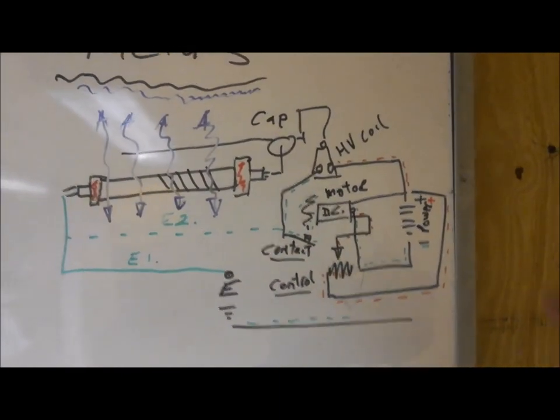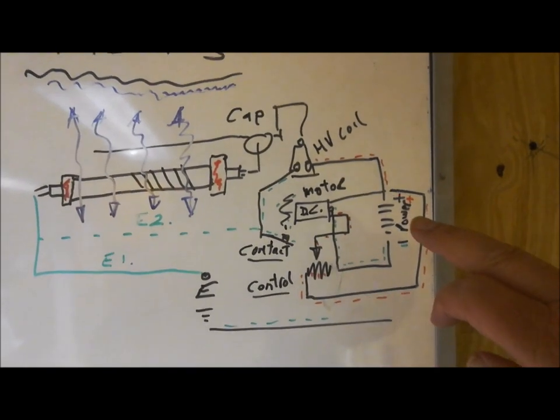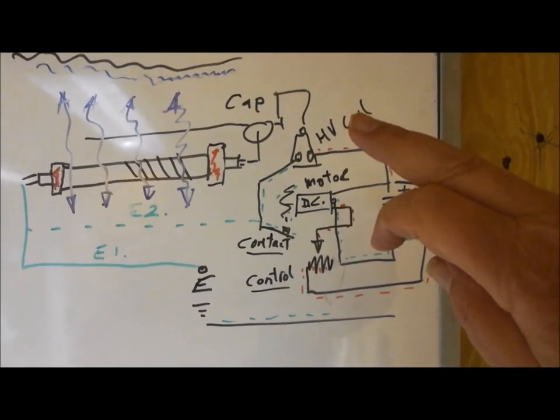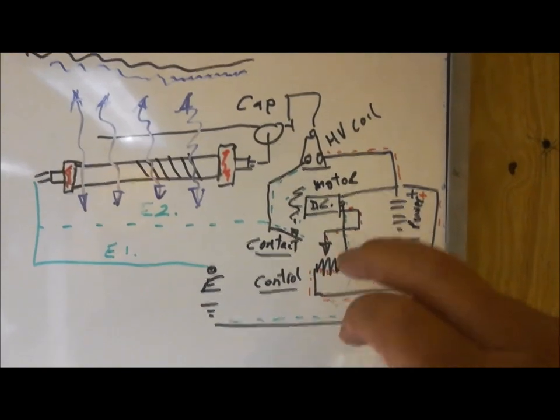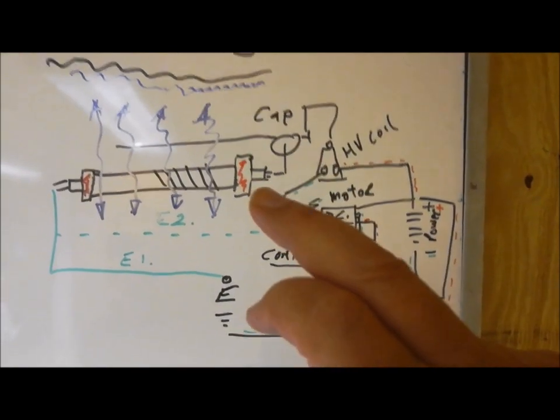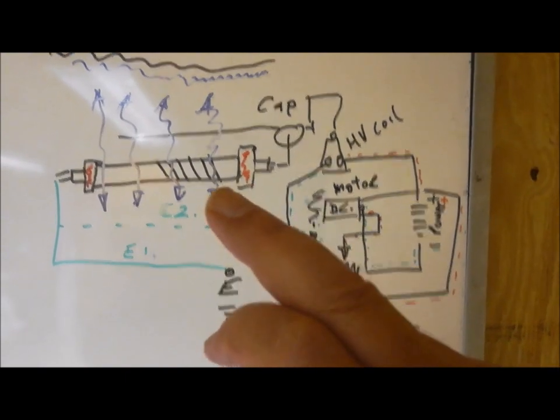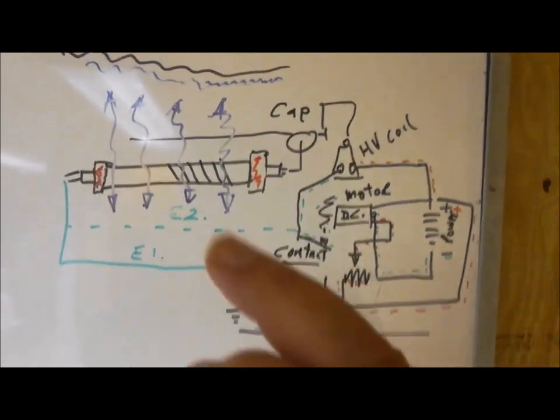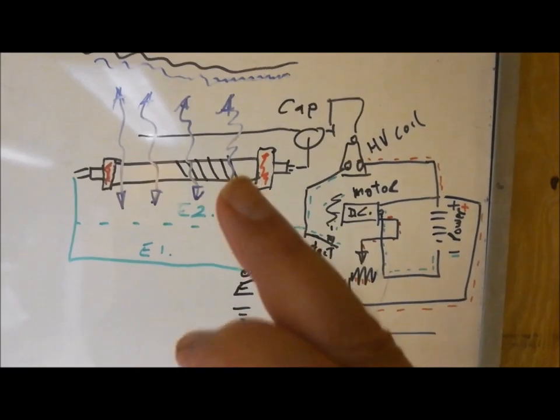We've got the power supply, DC motor, high voltage coil, a controller and a capacitor. Then we've got the scaffold tube with two magnets at either end and a coil here.